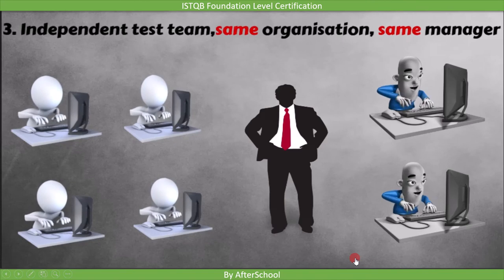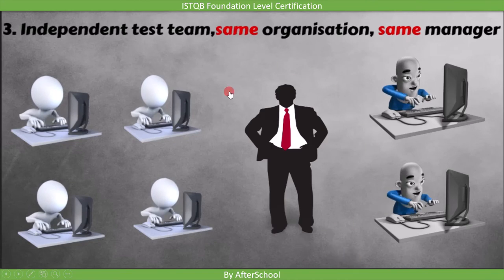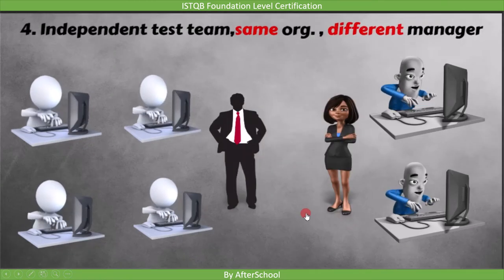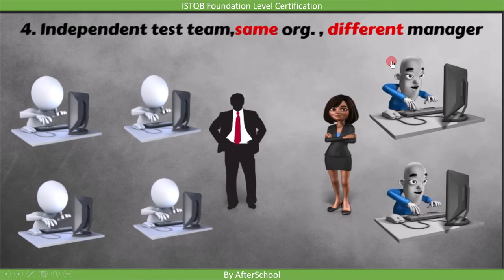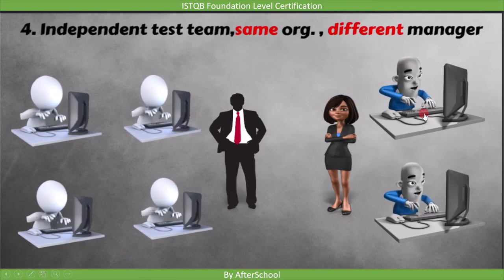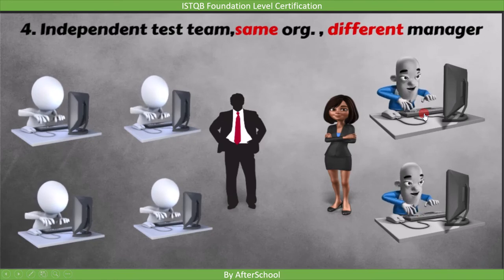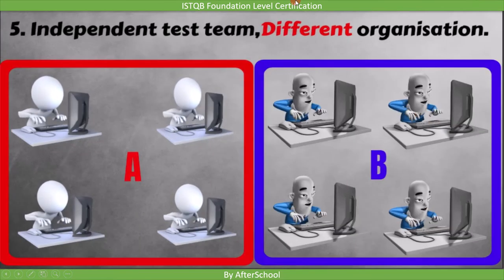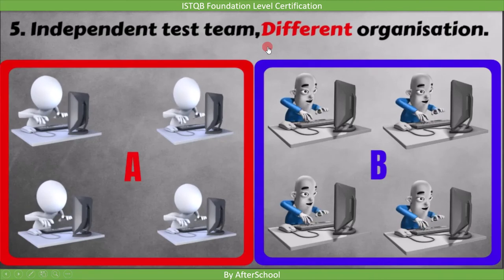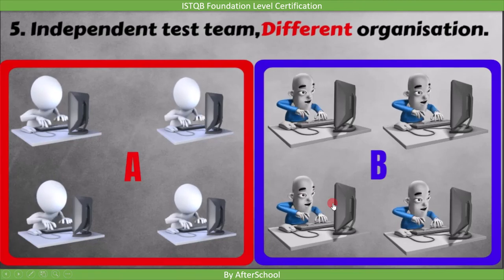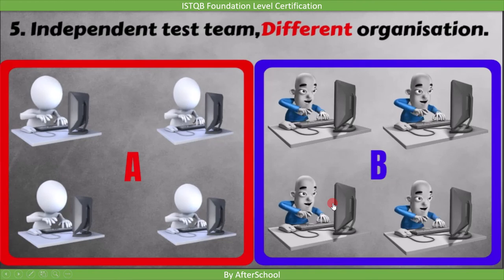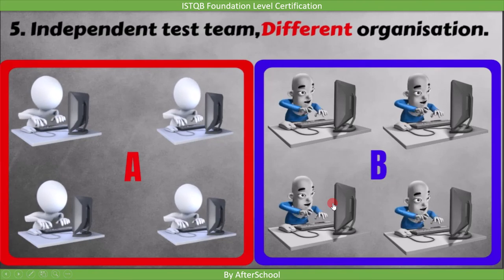Remember, in the third example the test team is independent but the manager and organization are the same. This is the fourth example, where the test team is independent and the organization is the same, however the managers are different. So the degree of independence is more compared to the last example. This is the last example, where the development team and testing team are in different organizations. In all the previous examples both teams were in the same organization, so here the degree of independence is clearly the highest.